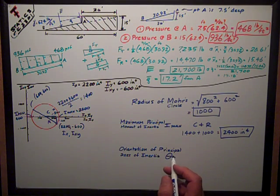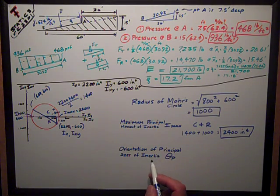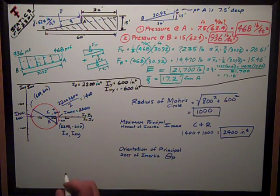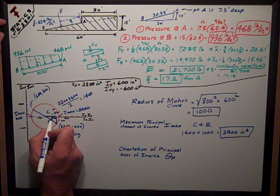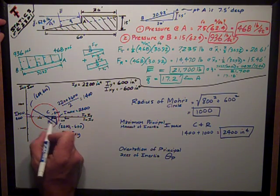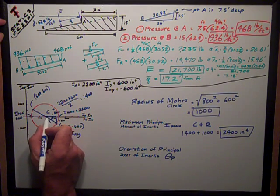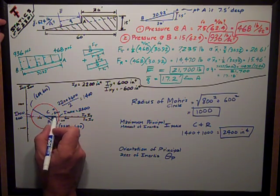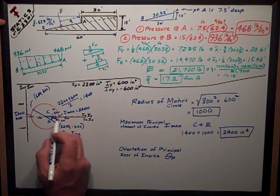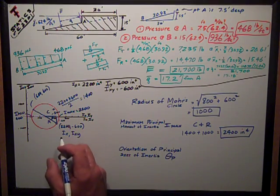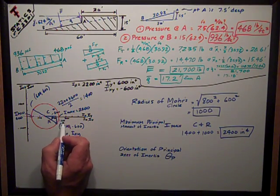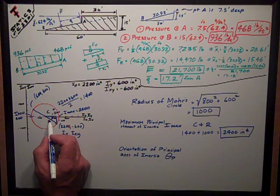Finally, I want to know the orientation of the principal axes of inertia, theta p. On Mohr's circle, that theta p is actually doubled, and it's really this angle right here from my Ixy line to the principal, the horizontal axis, which is where I'm getting Imax. I know that this length is 600, this length is 800.